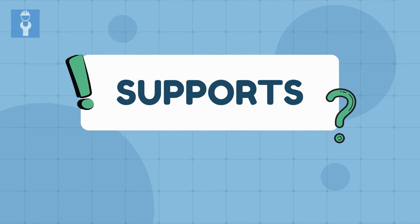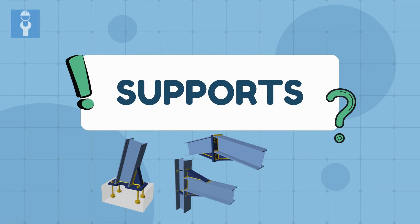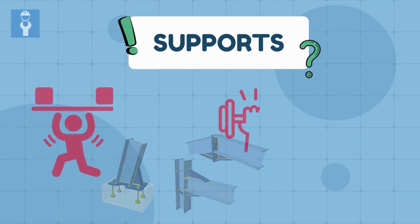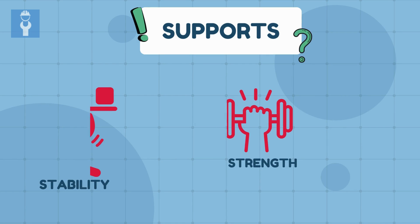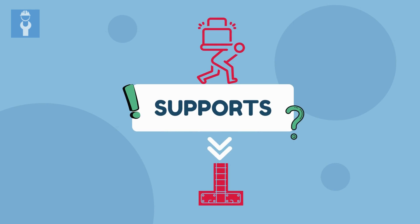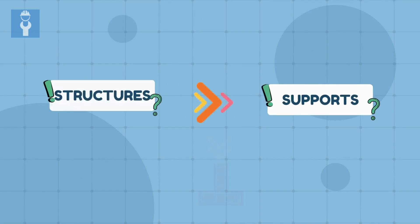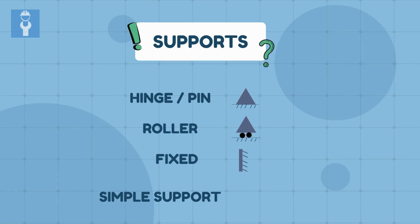Supports are one of the most critical aspects in any structure. Supports provide stability and strength. In fact, they're responsible for transferring the load from one member to the ground. So if you're dealing in structures, you must know about the different types of supports and how they differ.